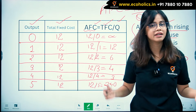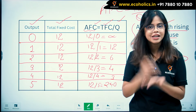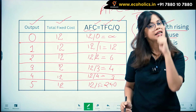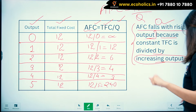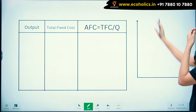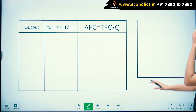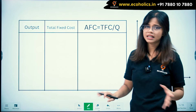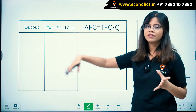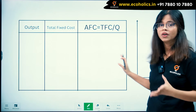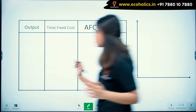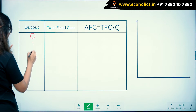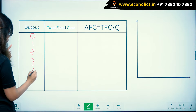Remember: AFC equals TFC divided by Q. Now we need to draw the AFC graph. We are taking the same schedule and plotting it. Output was 0, 1, 2, 3, 4, 5, 6 on the x-axis.